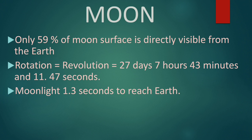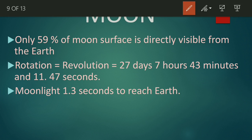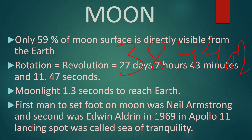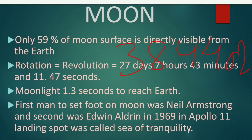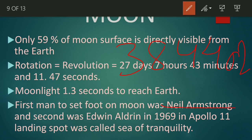The circumference of the moon is 11,000 kilometers. The distance of the moon from the earth is 384,402 kilometers. The first man to set foot on the moon was Neil Armstrong and the second person was Edwin Aldrin in the year 1969, in the spacecraft Apollo 11.